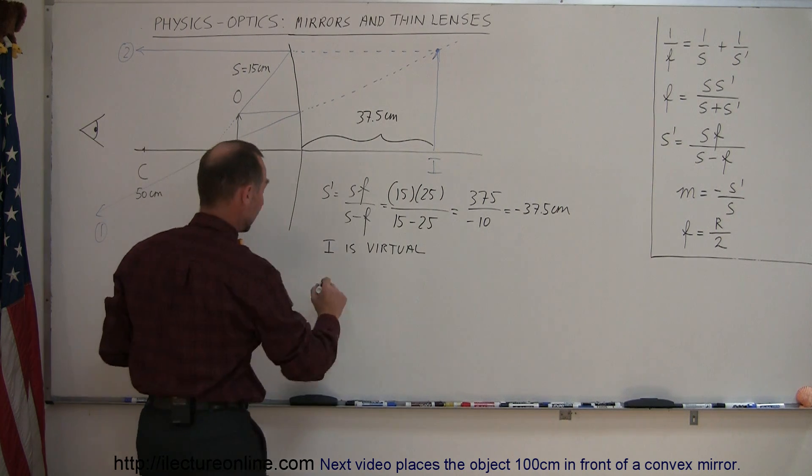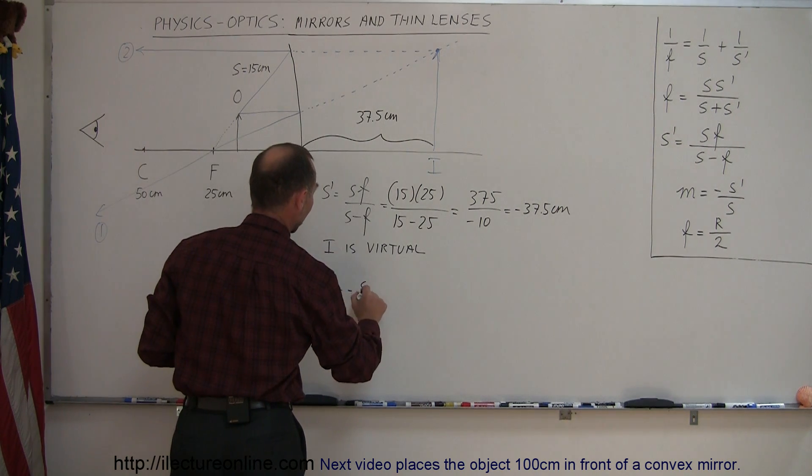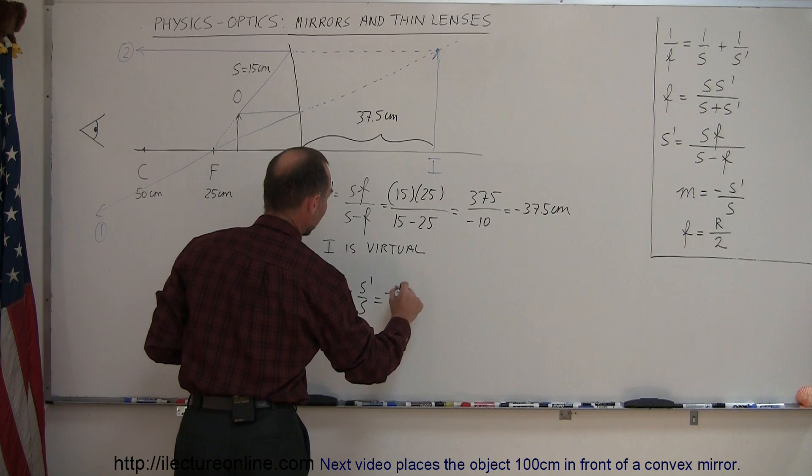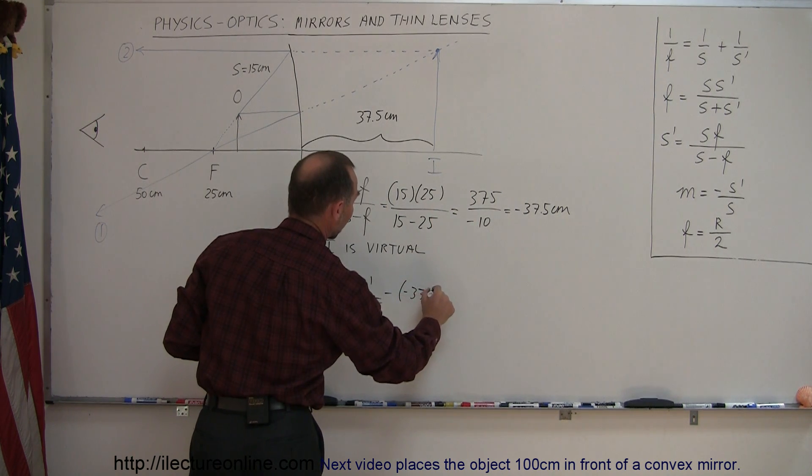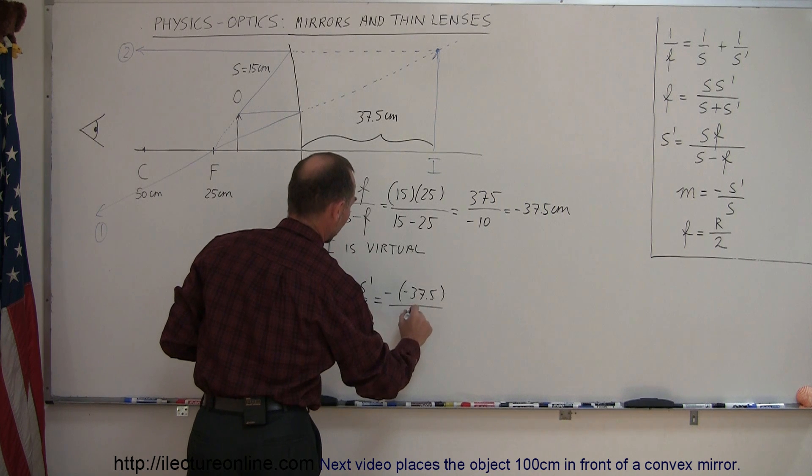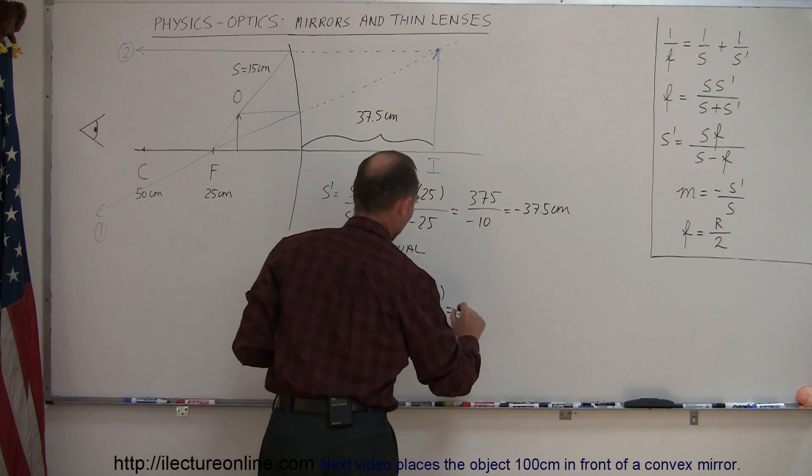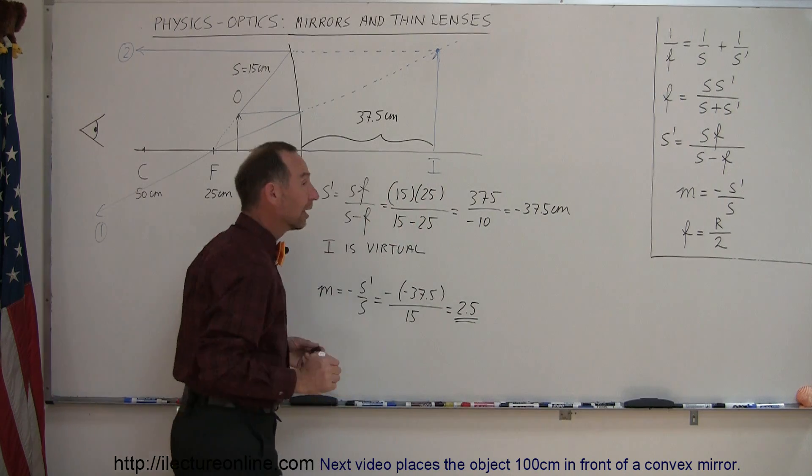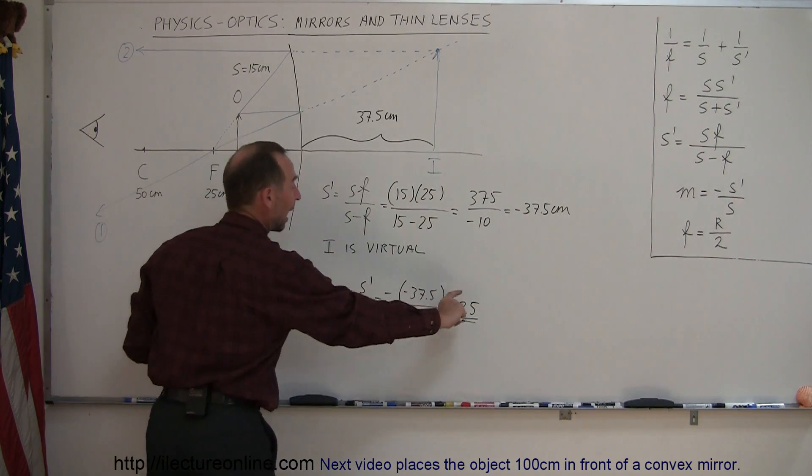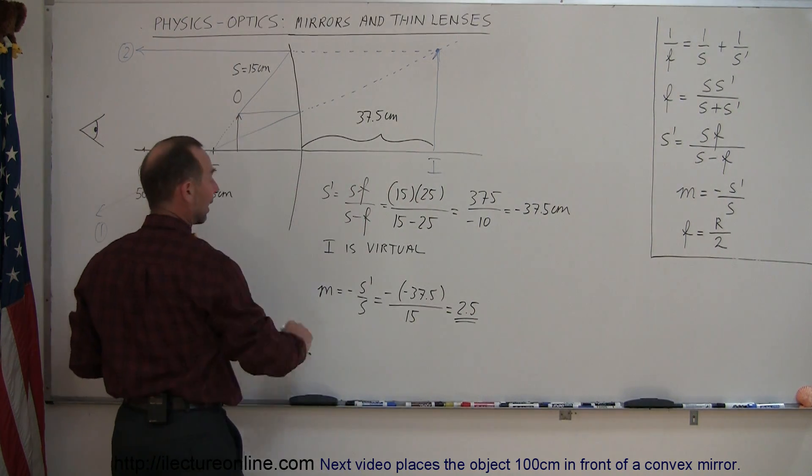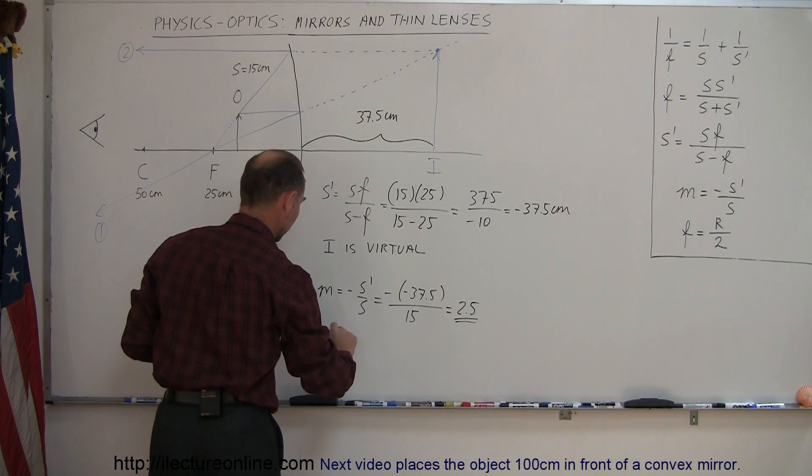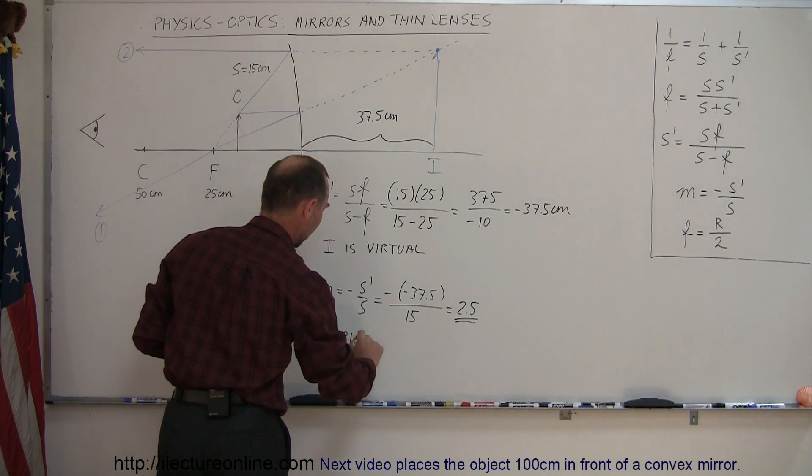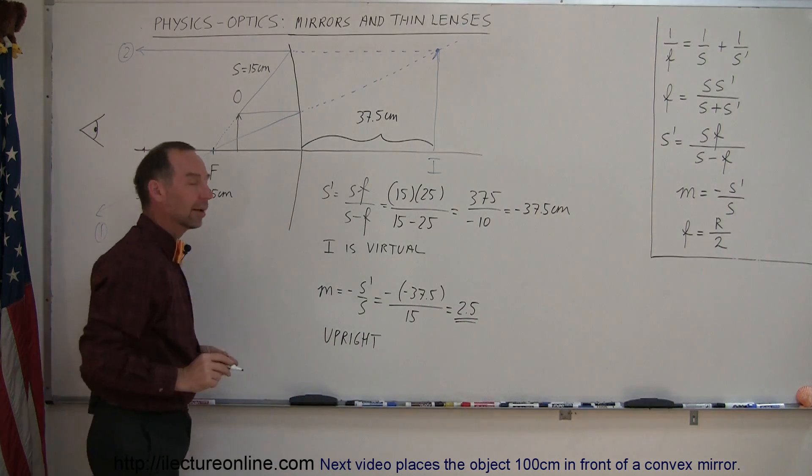Okay, now for the magnification. M is equal to minus S prime over S. So it's minus the negative 37.5 divided by S, which was a positive 15. And so this is a positive 2.5. So what that means is that the image is two and a half times the size of the object. And since it's positive, that means the image is upright. So we can just write that it's upright.